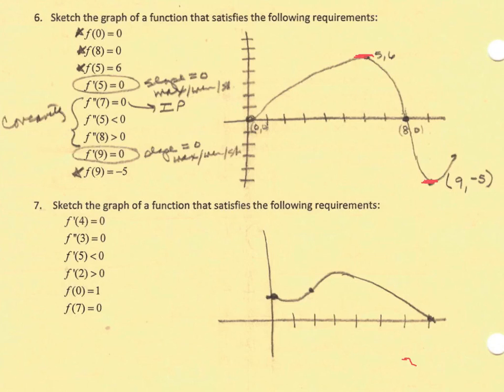So now continue gathering information. Look at your second derivatives. Those are indications of the concavity. So f prime prime of 7 being 0 tells me that it's an inflection point. So I'm just going to write that point right here. That's an inflection point. The concavity is changing at that point.